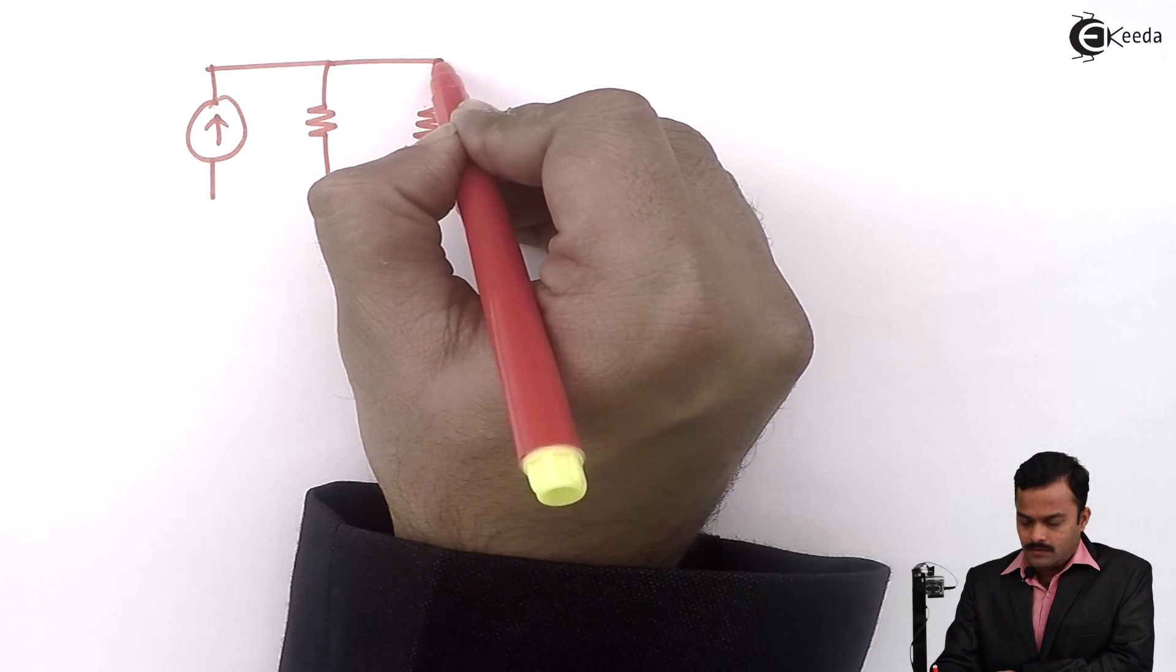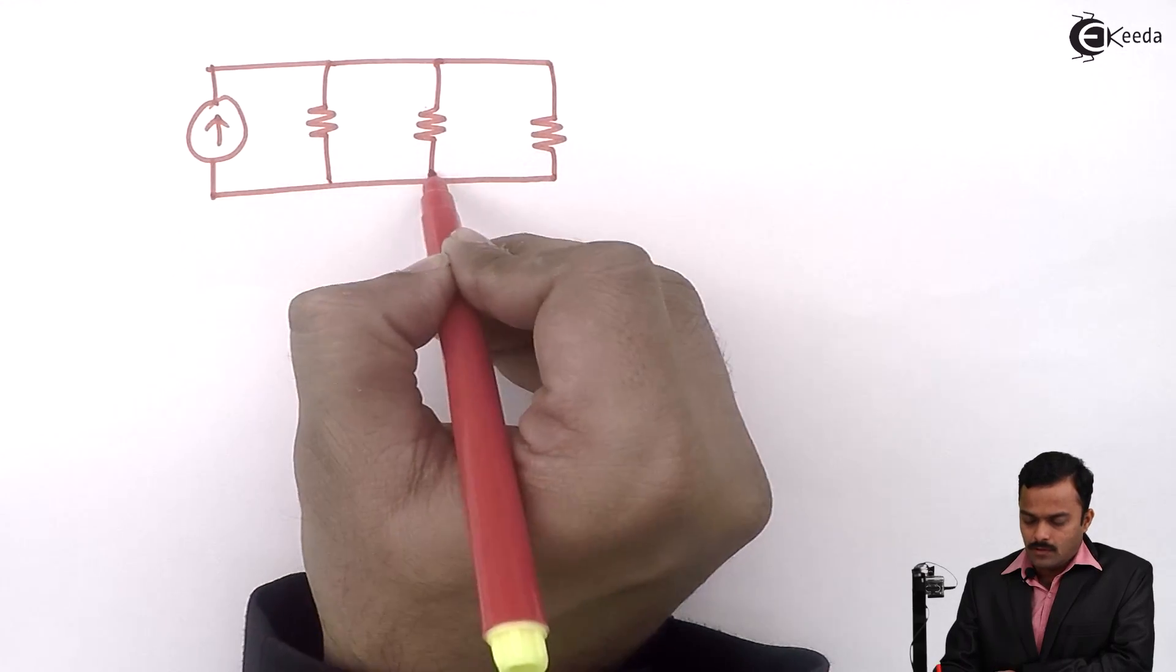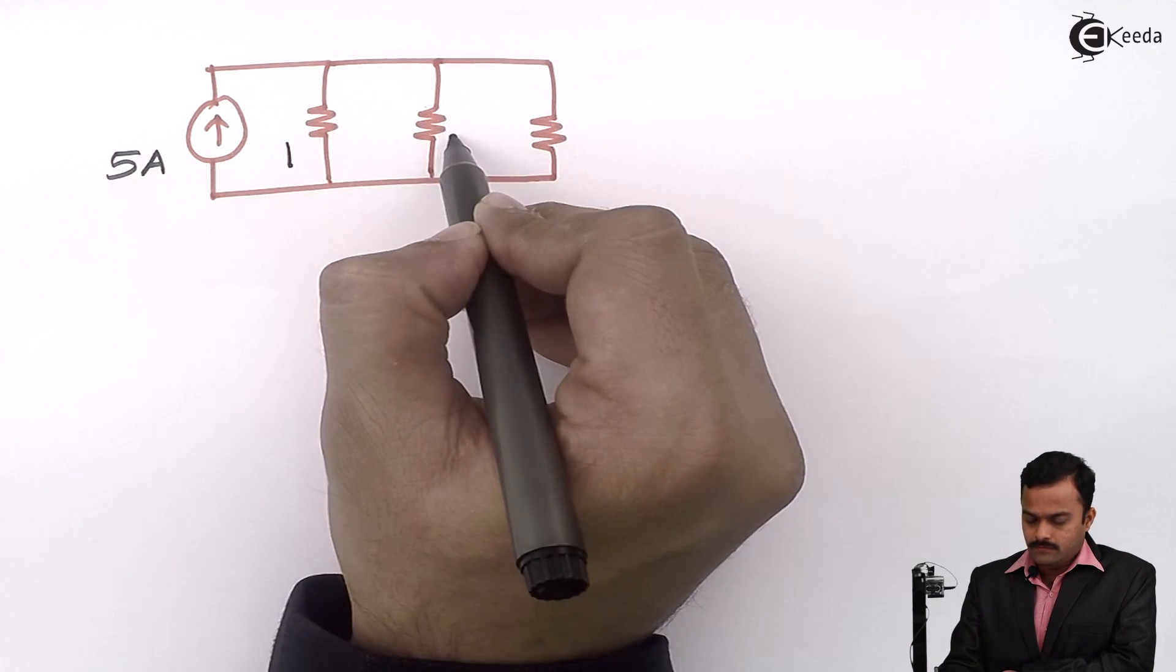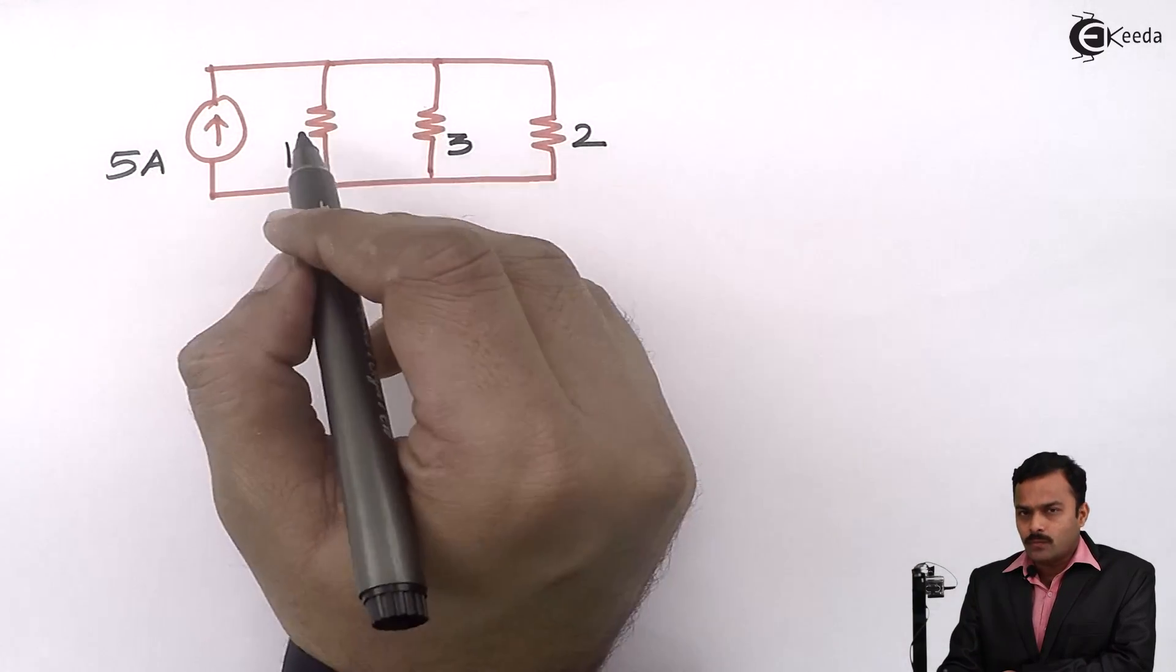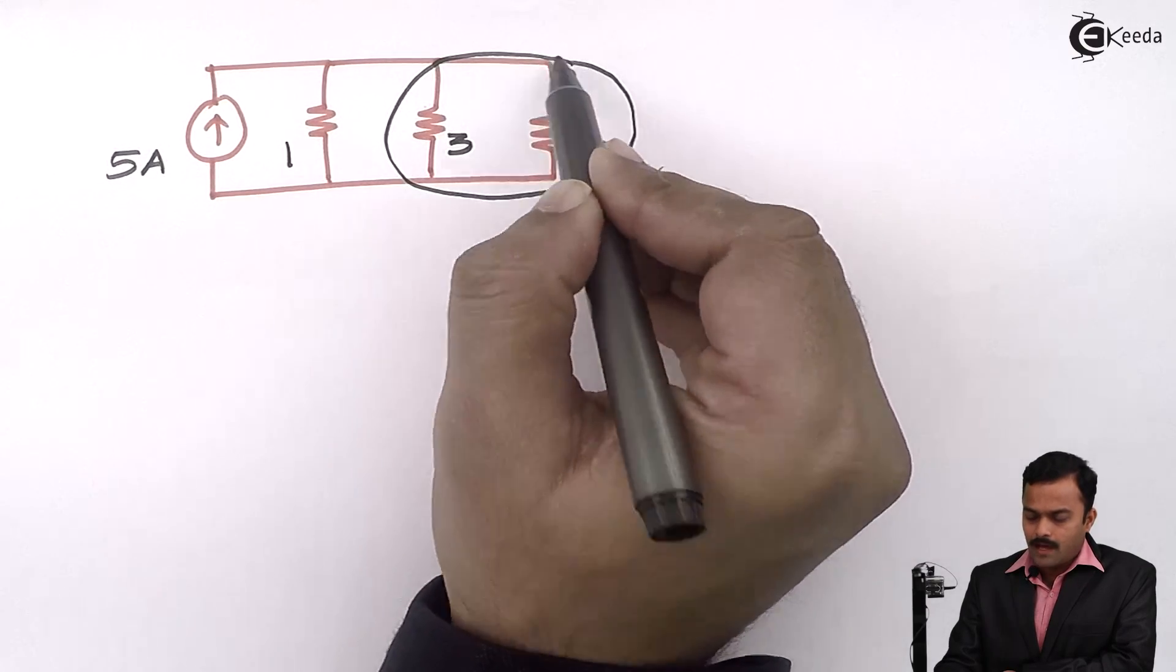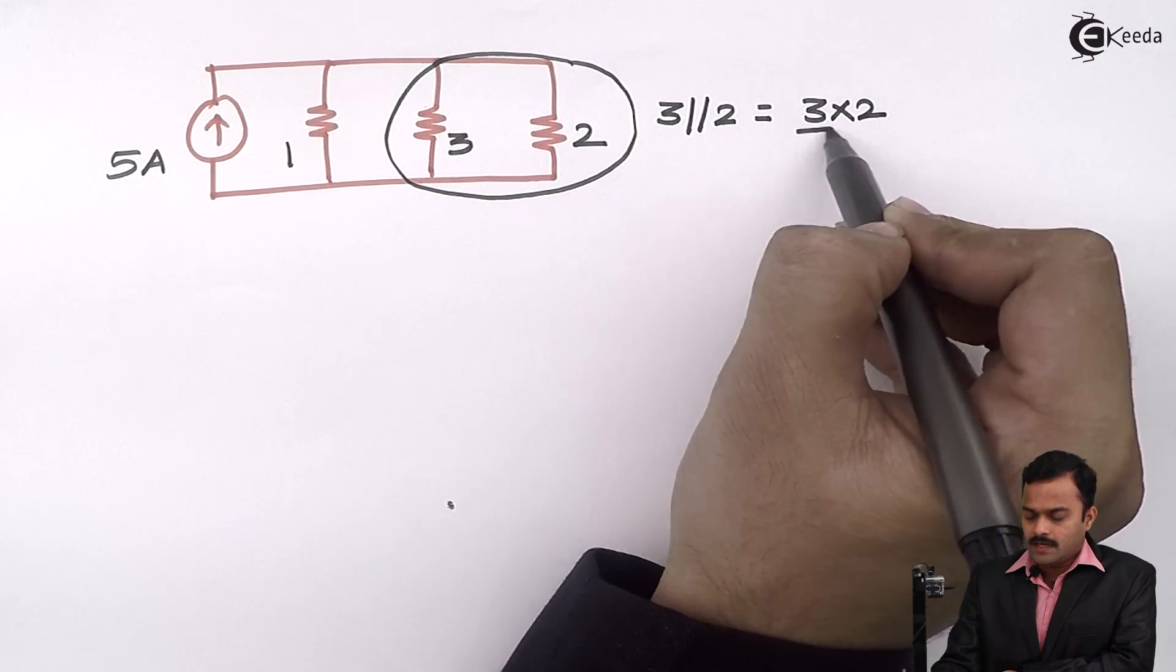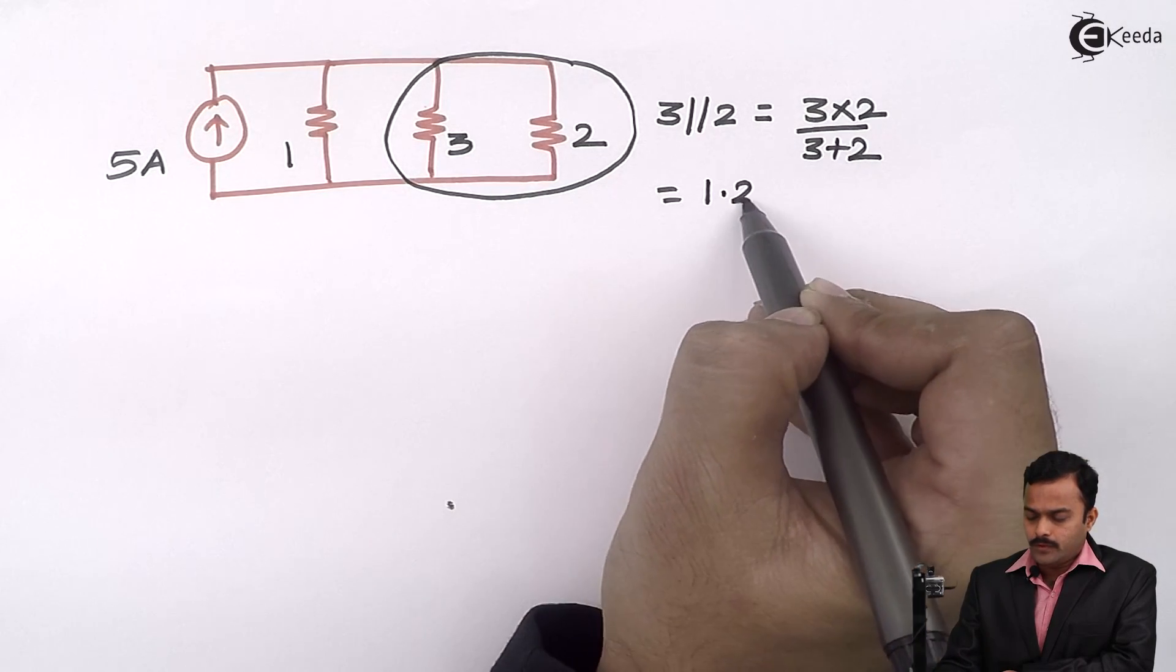Instead of this as 3 ohm, I will consider 1 ohm and 3 ohm I will connect after 1 ohm and the other 2 ohm resistance will come in parallel with all these elements. Finally, I will have 5 ampere current source, 1 ohm, this is 3 ohm and this is 2 ohm. Why I have interchanged 1 and 3? Because I can say this is a parallel combination. 3 parallel 2. If you solve, you will get answer as 1.2 ohm.